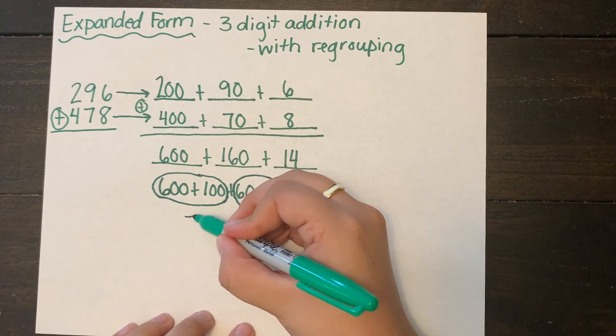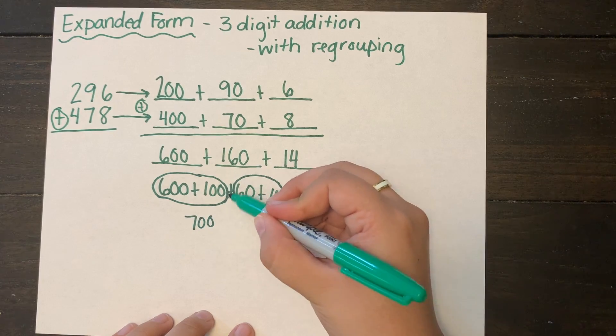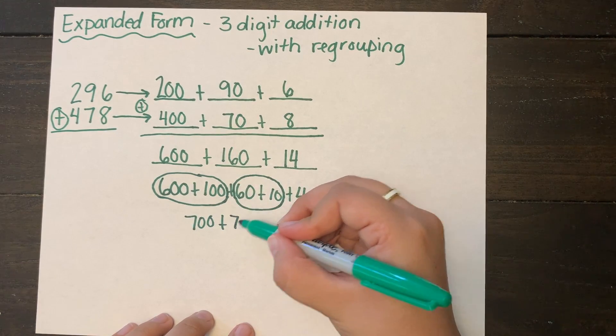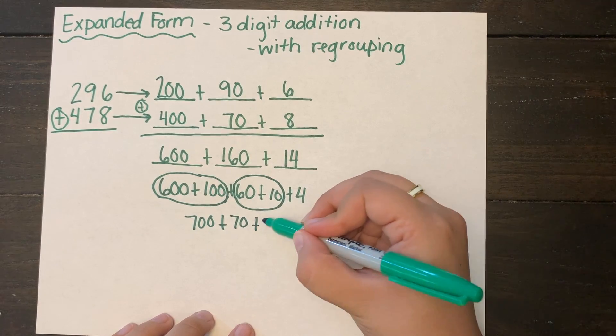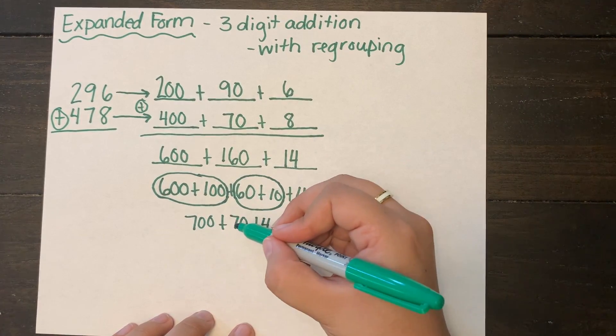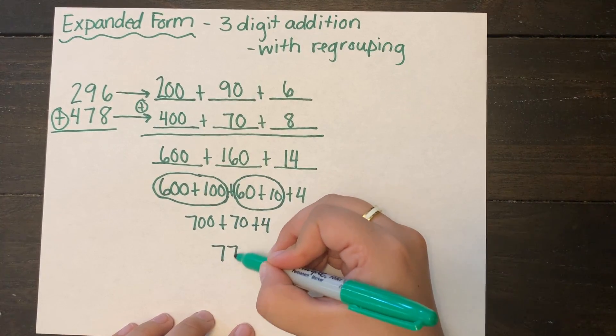So 600 plus 100 equals 700. 60 plus 10 equals 70. And then I add my 4 on. And when I combine it together, that equals 774.